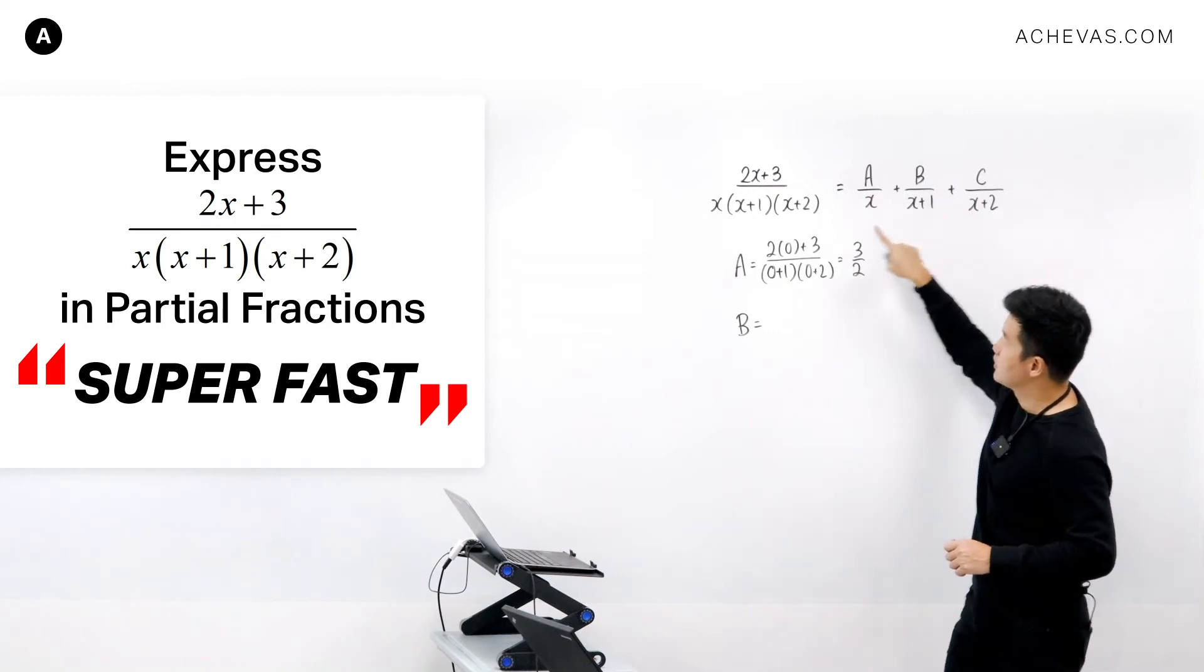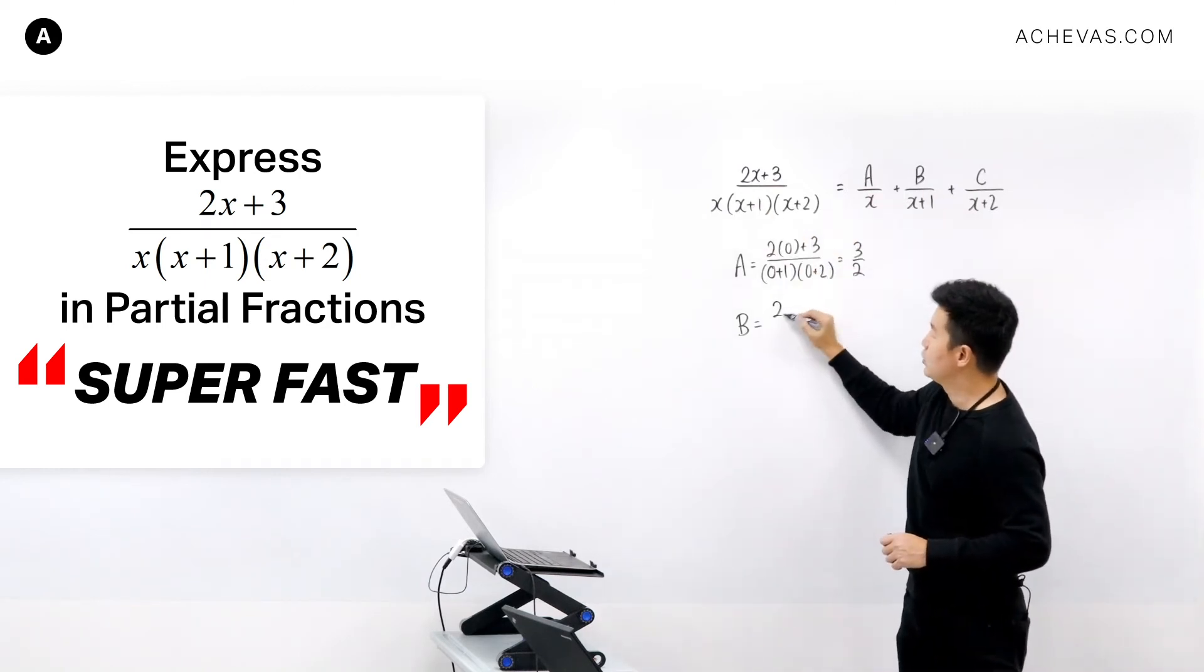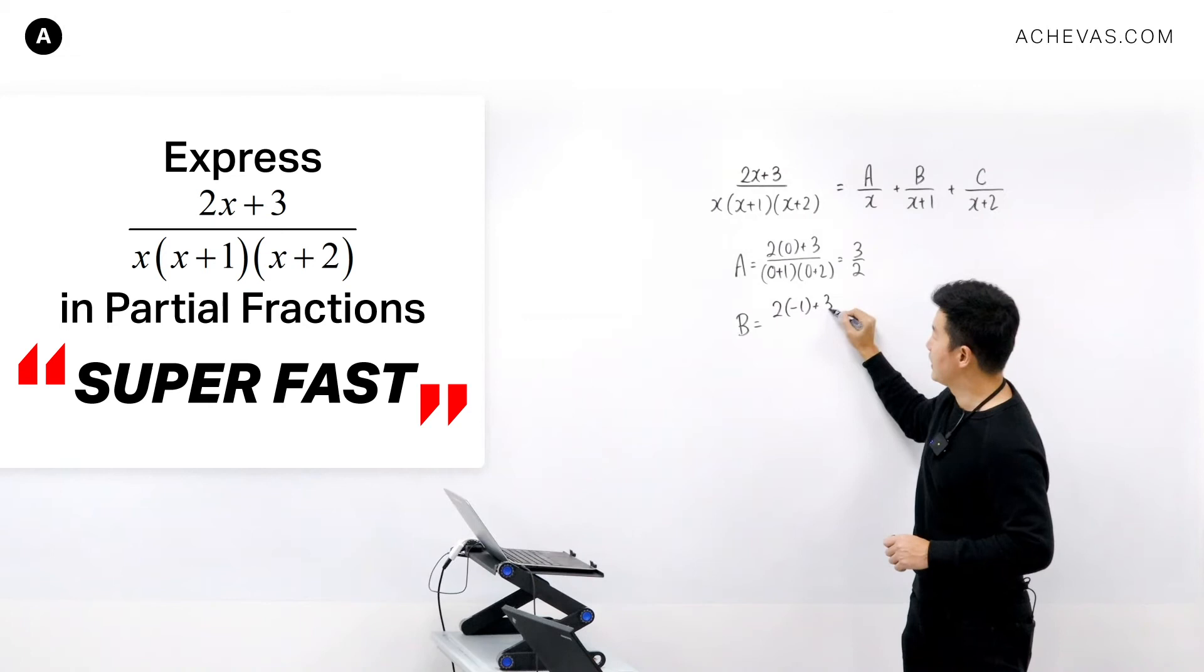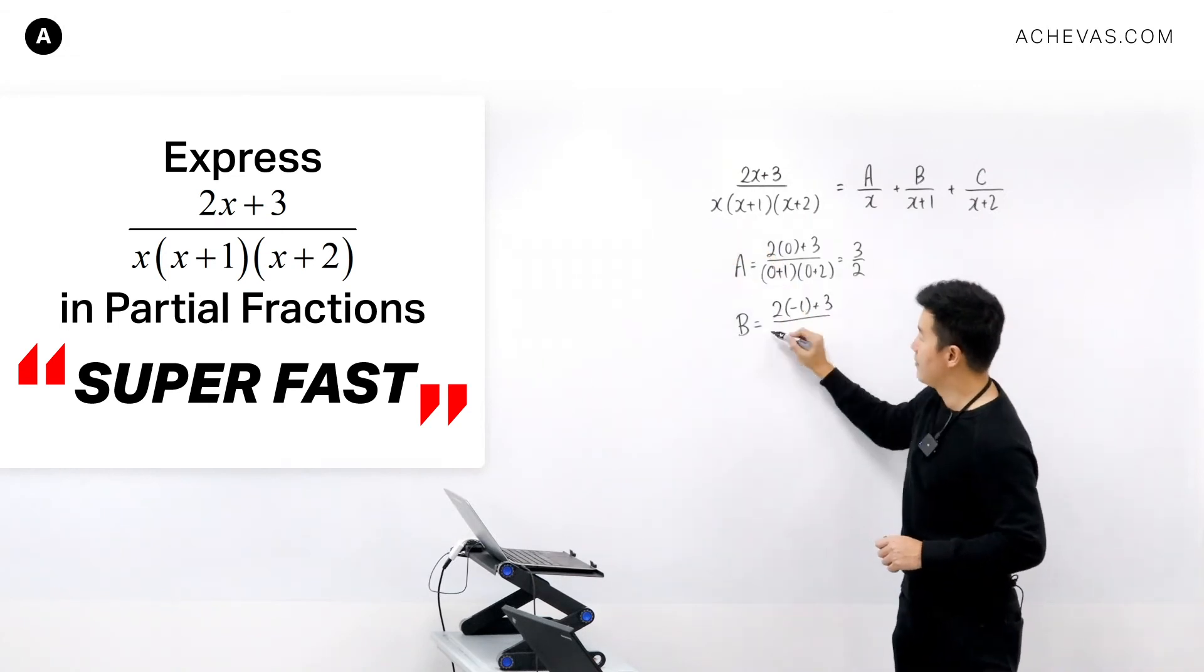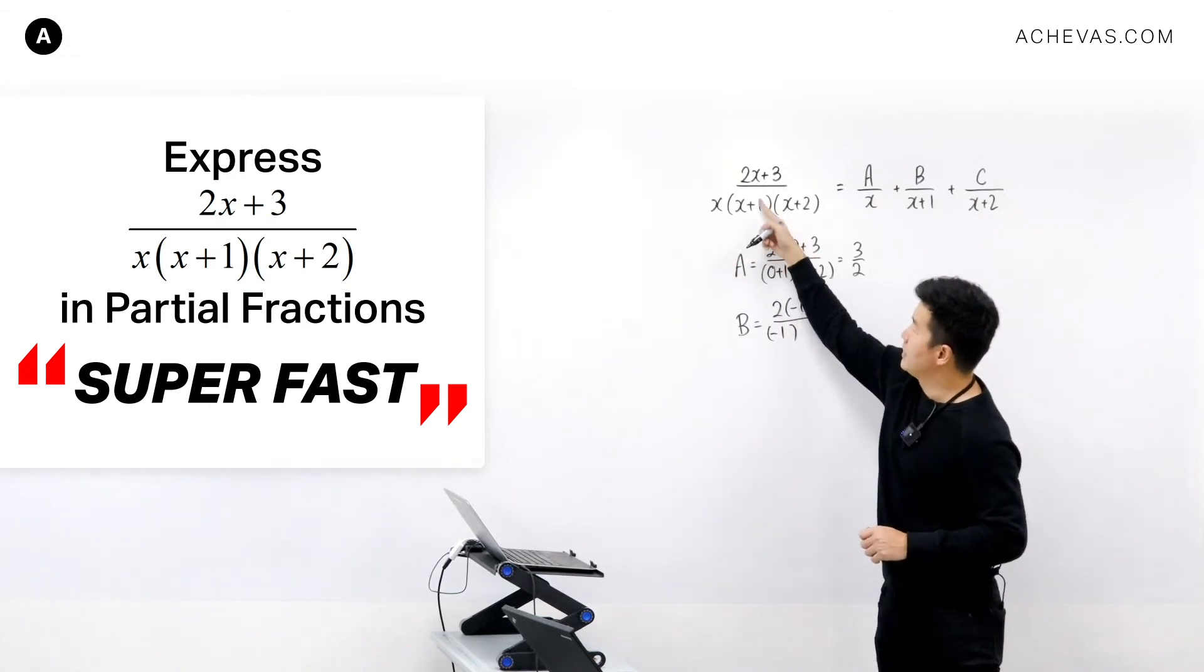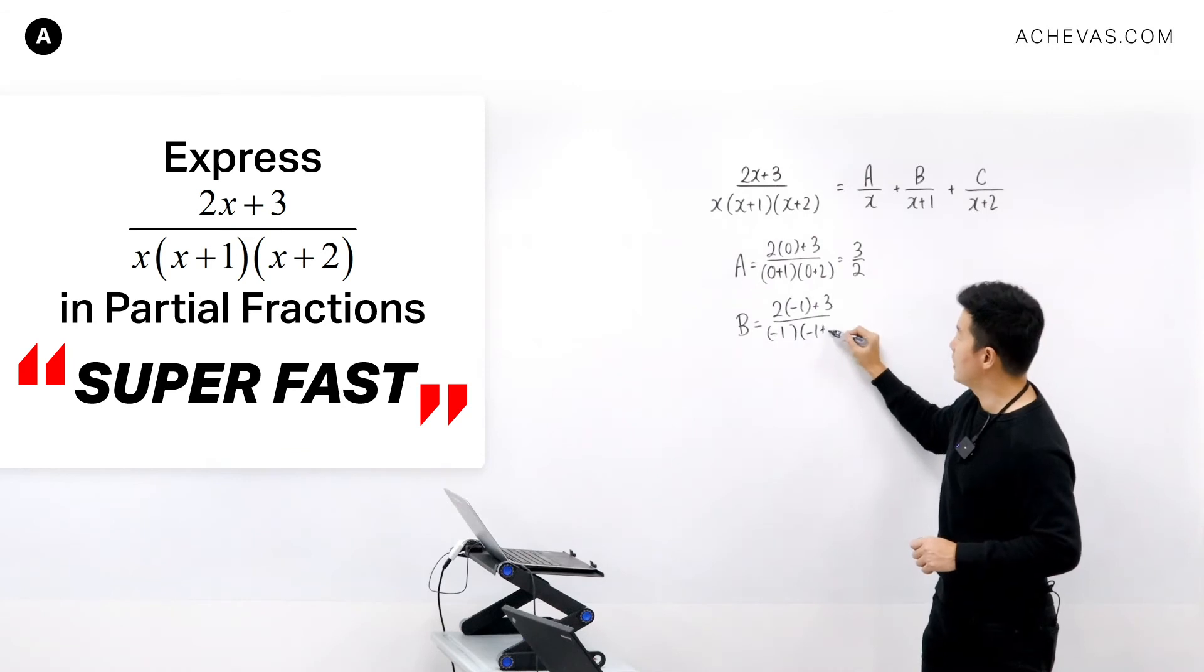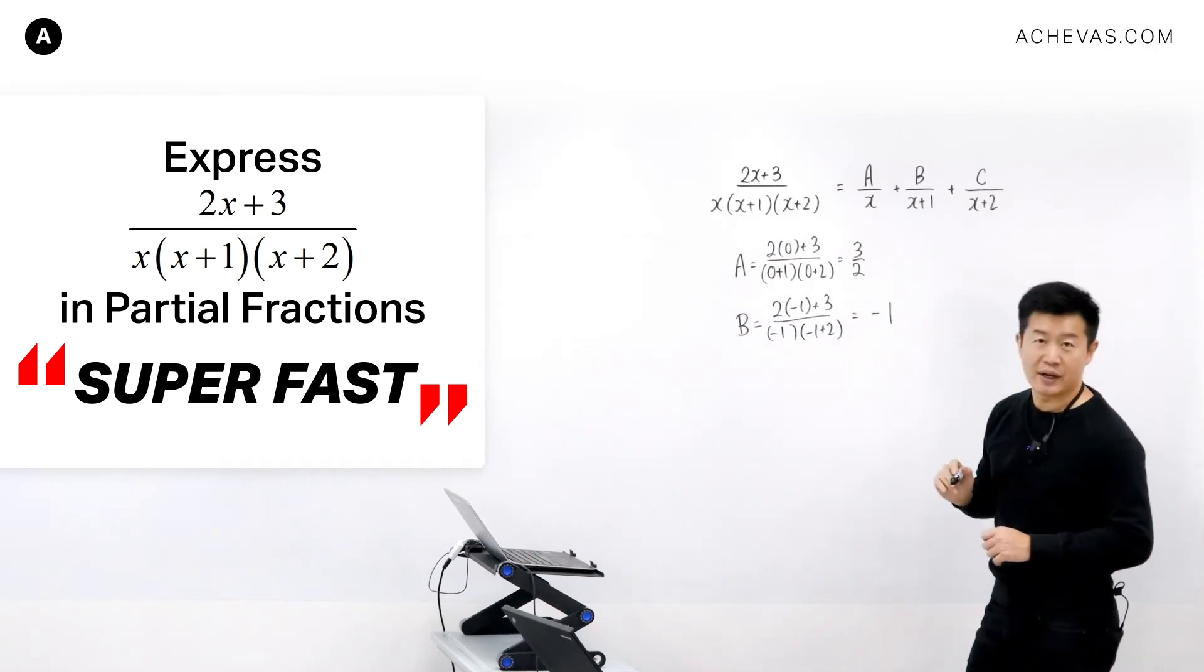So minus 1 caused this to be 0. So B will be equal to 2 times minus 1 plus 3 divided by minus 1. I'm ignoring this, and I'll have minus 1 plus 2. This gives me minus 1.